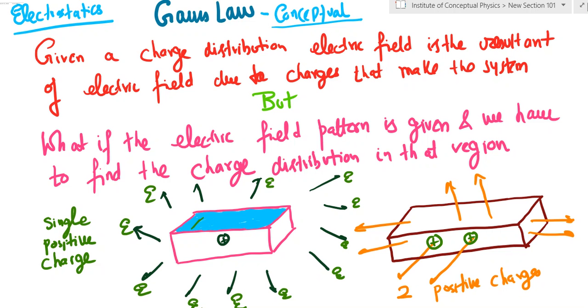All right, so next discussion is a conceptual discussion on Gauss law. Now, when you do Coulomb's law, which helps you to find electric field, there is a way of looking at it. The way of looking at Coulomb's law is you're given a charge distribution - could be one charge, two charges, could be a semicircular ring, could be a line charge - in which you have to apply complex integration, which is a headache.